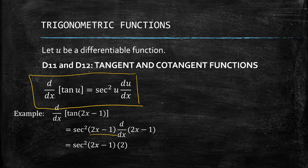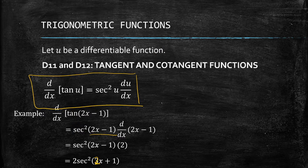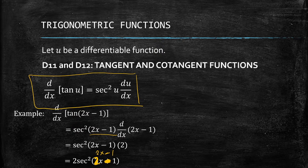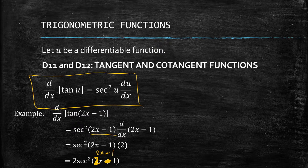The derivative of (2x minus 1) is simply 2. Then we rearrange, so we have 2 secant squared of (2x minus 1) as our derivative of tangent of (2x minus 1).